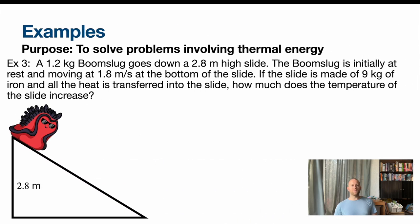Let's look at one final example. This is the one I've warned you about. This is a conservation of energy problem, except now we're involving heat. We've got a Boom Slug that's going down the slide. He's initially at rest. At the bottom of the slide, he's moving 1.8 meters per second. If this slide is made of 9 kg of iron, and all the heat from the Boom Slug going down is transferred into the slide, we want to know how much does the temperature of the slide increase.